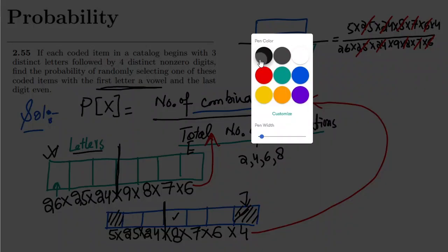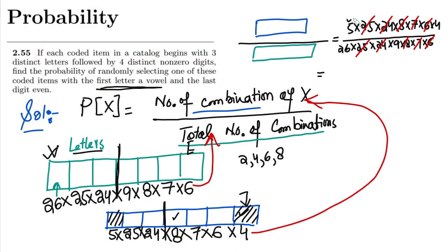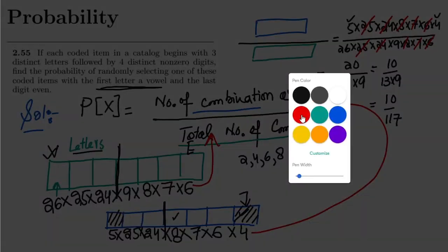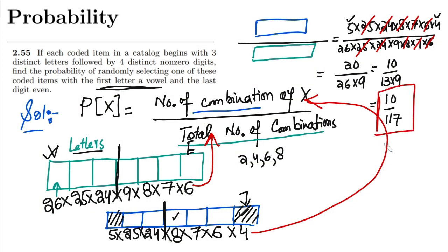After cancellation, I have 5 × 4 divided by 26 × 9, which is 20 divided by 234. Simplifying, that gives 10 divided by 117. So that is the answer to this question.